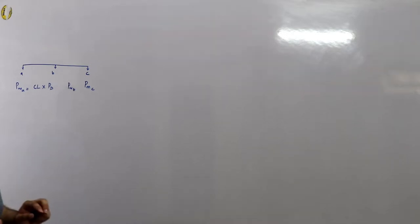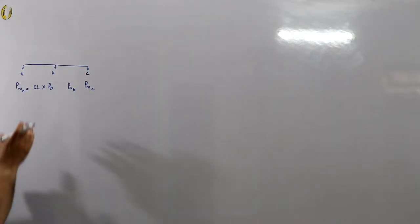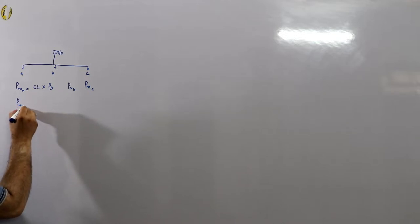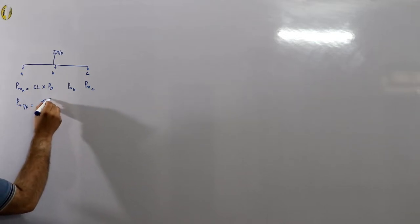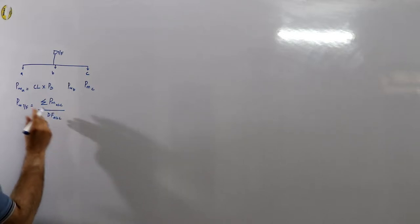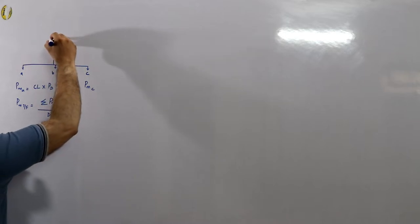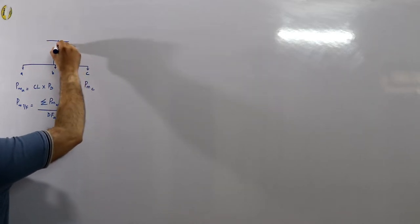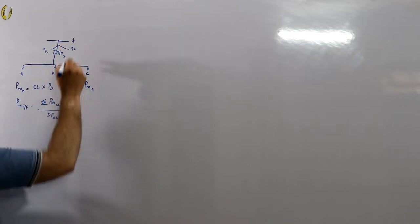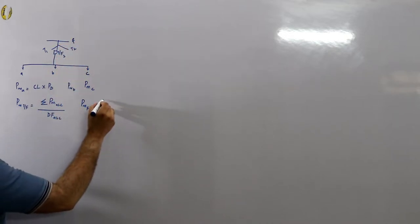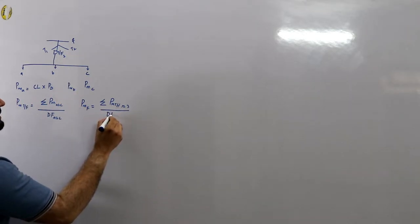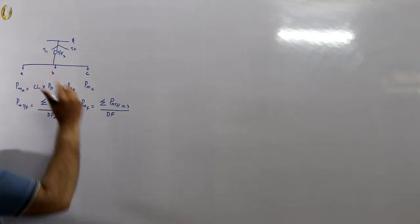These loads are connected to a transformer. The maximum demand on the transformer is the summation of the maximum demands of loads A, B, and C, divided by the diversity factor among them. This transformer is connected to a feeder, and there are multiple transformers — transformer 1, 2, 3. The maximum demand on the feeder is the summation of the maximum demands of the transformers divided by the diversity factor among the transformers.